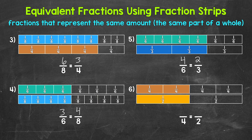Lastly, let's move on to number six. The top fraction strip has four equal parts and two are shaded, so it's showing two fourths. That's going to be equivalent to how many halves? The bottom fraction strip has two equal parts and one is shaded, so that is showing one half. Two fourths and one half are equivalent fractions.